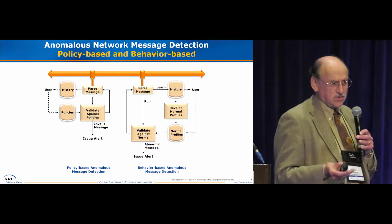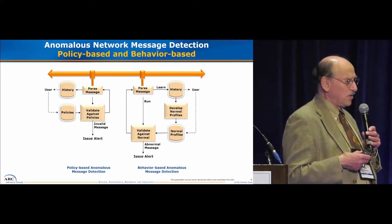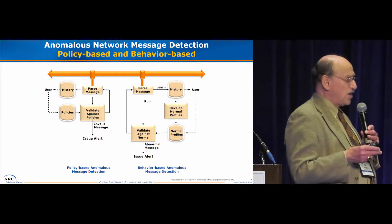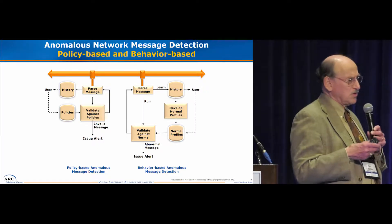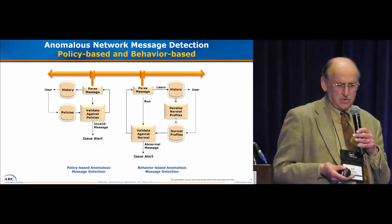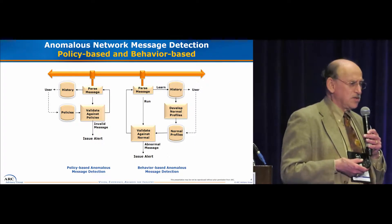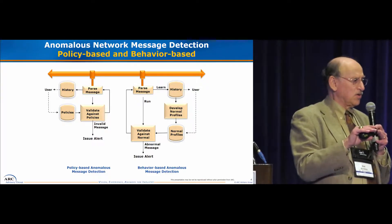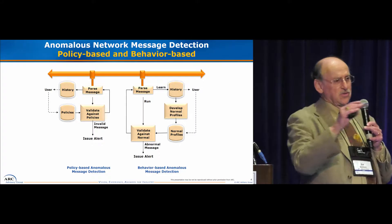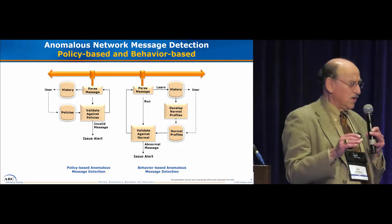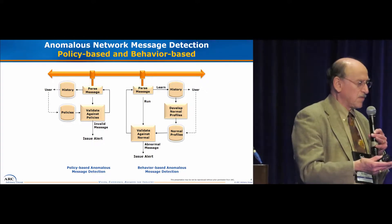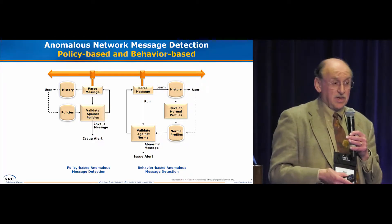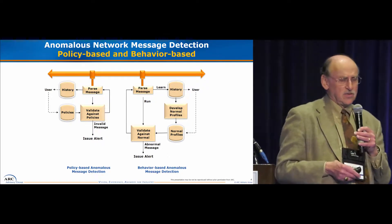When we talk about anomaly detection, I'm focusing on solutions that look at the messages flowing within the networks. Generally they are passive solutions — they go off a span port or something similar. I have two cases: one I call policy-based anomaly detection, where someone has established certain policies specifying that this endpoint is allowed to talk to that endpoint with certain protocols, certain registers, and so on. The detection then alerts you if anything happens outside of those allowed policies — it's essentially network message whitelisting.